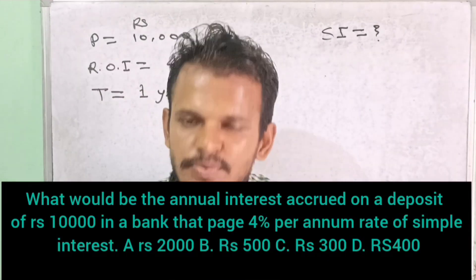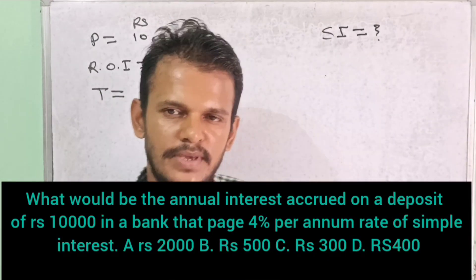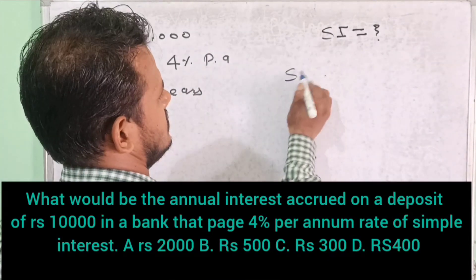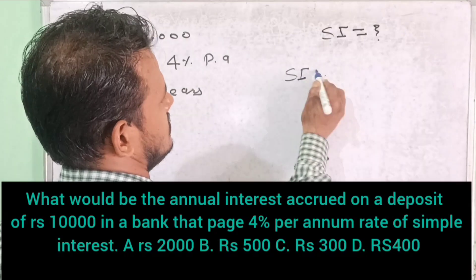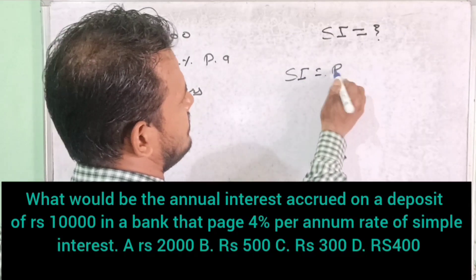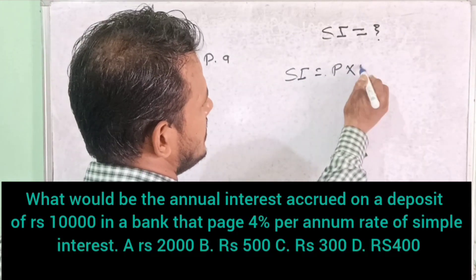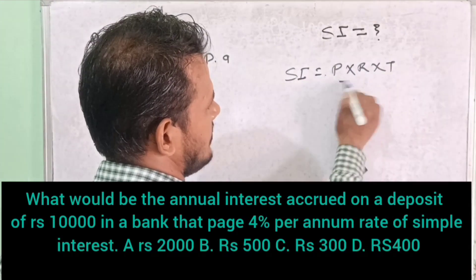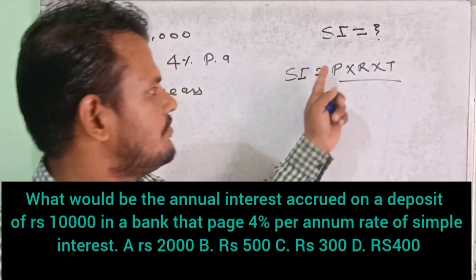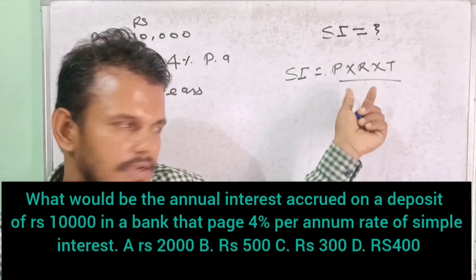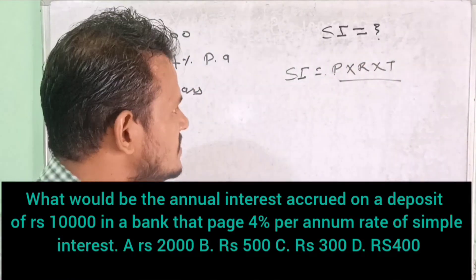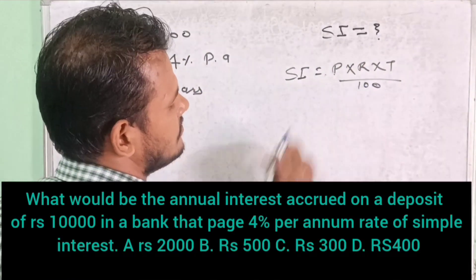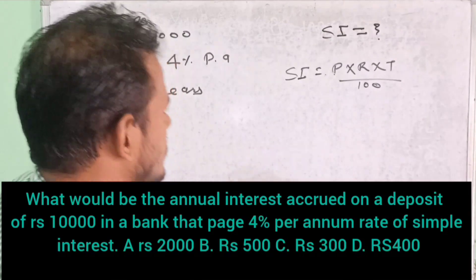The simple interest formula is PRT by 100 — Principal into Rate into Time, divided by 100. Rate of interest means divided by 100. So: PRT by 100.